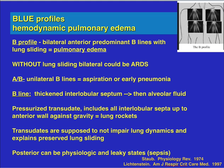Remember, you have to have more than two to three B lines. A lot of normal patients have one or two B lines — it doesn't mean they have pulmonary edema. The more B lines you have, the more problematic the condition. Bilateral B lines without lung sliding on lung ultrasound could represent ARDS or a pulmonary fibrosis type pattern.